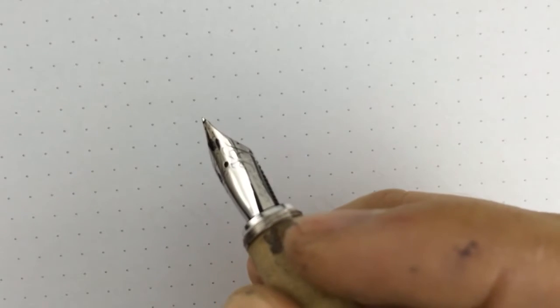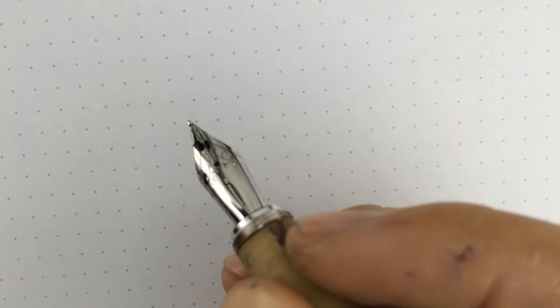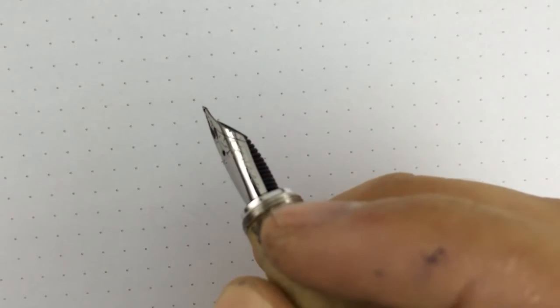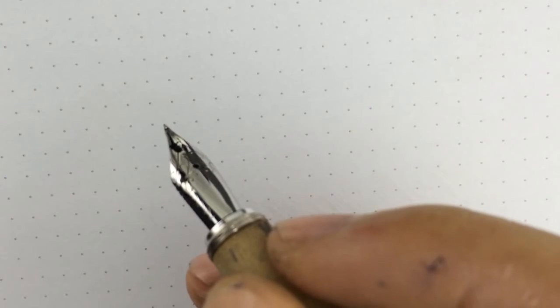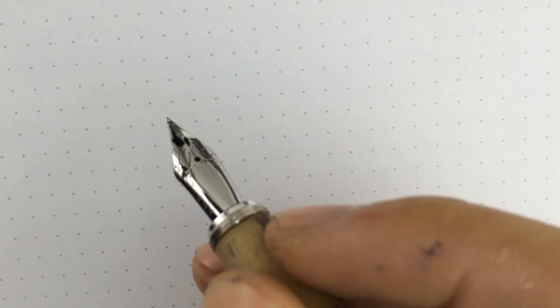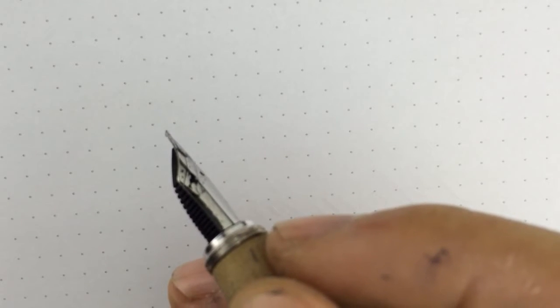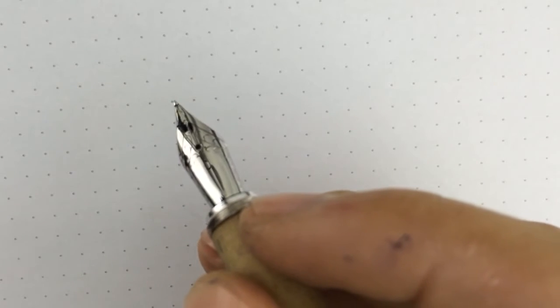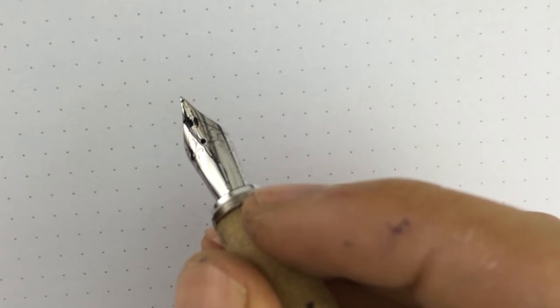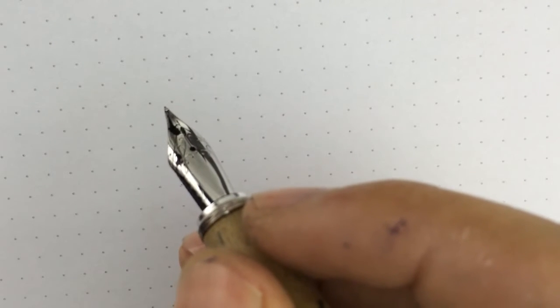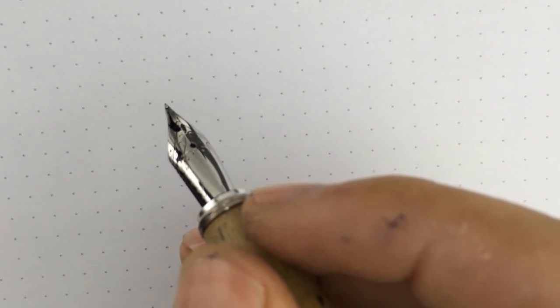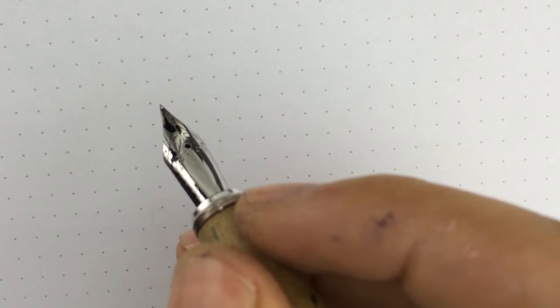Today I have here a Jowo size 6 steel nib that I have ground to architect point. This is 45 degrees, but I will tell you now how important the angle I ground the nib is.